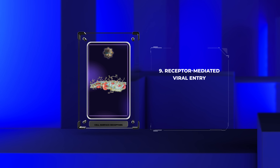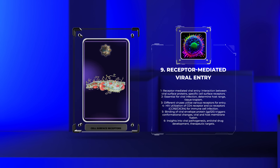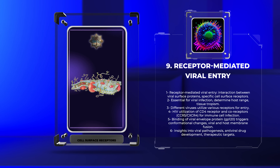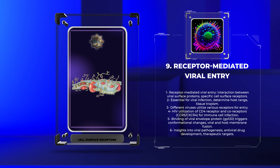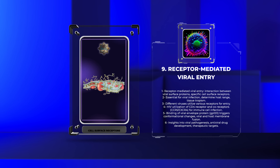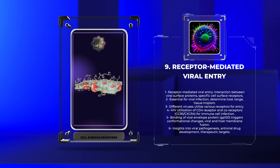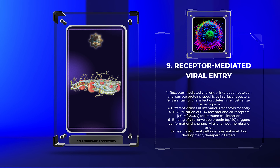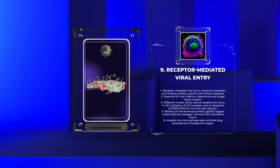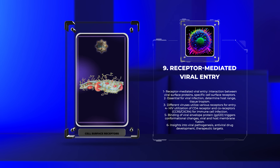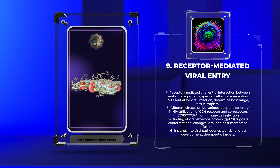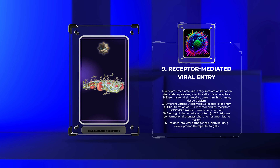Receptor-mediated viral entry involves the interaction between viral surface proteins and specific cell surface receptors, enabling the entry of viruses into host cells. This process is essential for viral infection and can determine host range and tissue tropism. For example, the human immunodeficiency virus (HIV) uses the CD4 receptor and co-receptors, such as CCR5 or CXCR4, to infect immune cells. The binding of the viral envelope protein GP120 to these receptors triggers conformational changes, enabling fusion of the viral and host cell membranes. Understanding receptor-mediated viral entry provides insights into viral pathogenesis, antiviral drug development, and potential targets for therapeutic intervention.